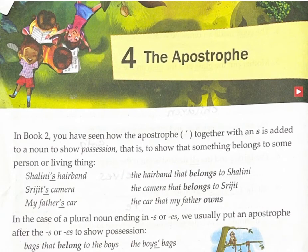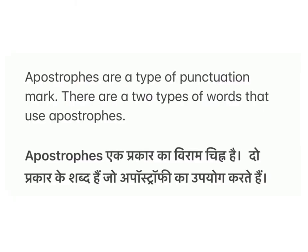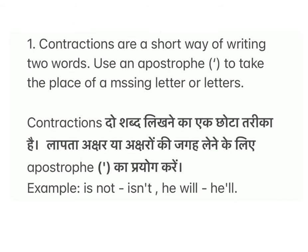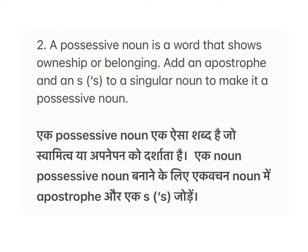Lesson 4: The Apostrophe. Apostrophes are a type of punctuation mark. There are two types of words that use apostrophes. Number 1: Contractions are a short way of writing two words. Use an apostrophe to take the place of a missing letter or letters. Example: 'is not' becomes 'isn't', 'he will' becomes 'he'll'.